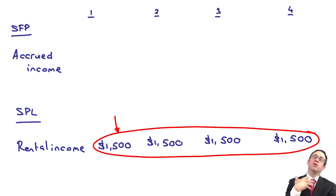Okay and the key bit there is that in year one we didn't receive cash but we use the accruals principle.